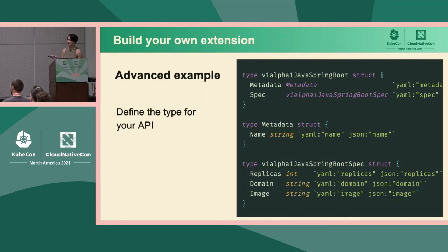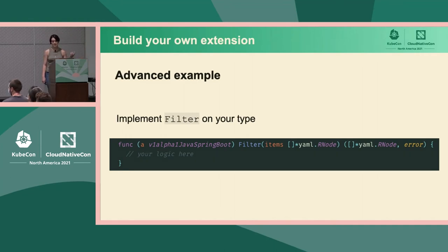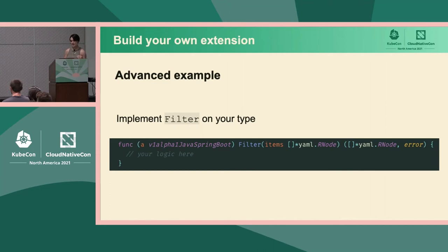To implement something more sophisticated, we first define a type in Go that corresponds to the custom resource we're exposing. This type has the standard metadata and spec fields you'd expect a Kubernetes object to have, and a spec with three fields: the `domain` and `image` fields from the end user configuration, plus an optional `replicas` field. Since this struct is populated from YAML, it has YAML tags — important to remember. We then implement a filter method on that type with the same signature as the basic example: it takes in a list of items from the resource list, we do whatever we need to do, then return the resulting items and/or an error. The framework handles reading from standard in, calling this filter function, and writing the items back into a resource list on standard out.